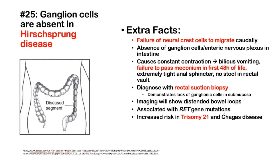This can be associated with RET gene mutations. It is particularly high yield to know there's an increased risk in trisomy 21 of having Hirschsprung disease. You can also acquire Hirschsprung disease from Chagas disease, due to the amastigote destruction of the ganglion cells. Also, another name for Hirschsprung disease is congenital megacolon, so you might see that on some examinations.